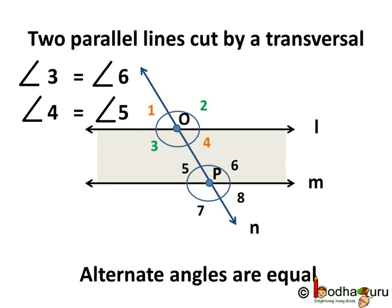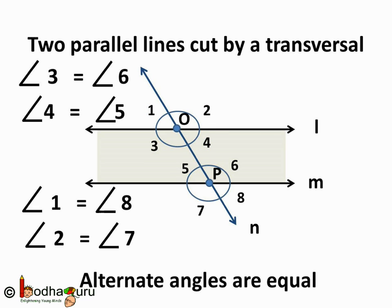So now you know what alternate angles are. You should also remember that alternate angles are equal. Angle 3 is equal to angle 6, and angle 4 is equal to angle 5. For exterior angles, angle 1 is equal to angle 8, and angle 2 is equal to angle 7. So there are 4 pairs of alternate angles — 2 pairs consist of interior angles and 2 pairs consist of exterior angles.